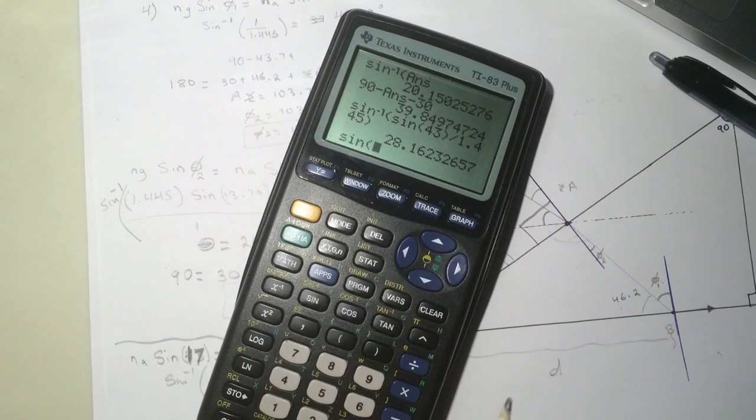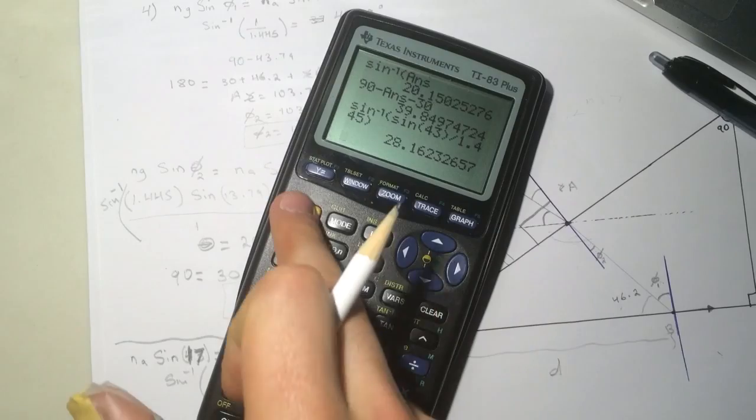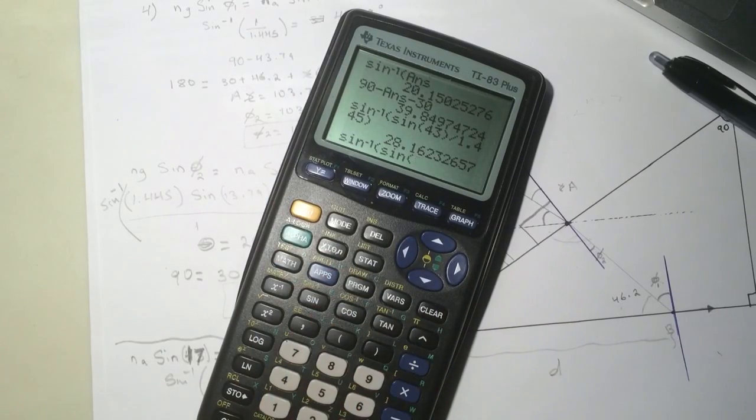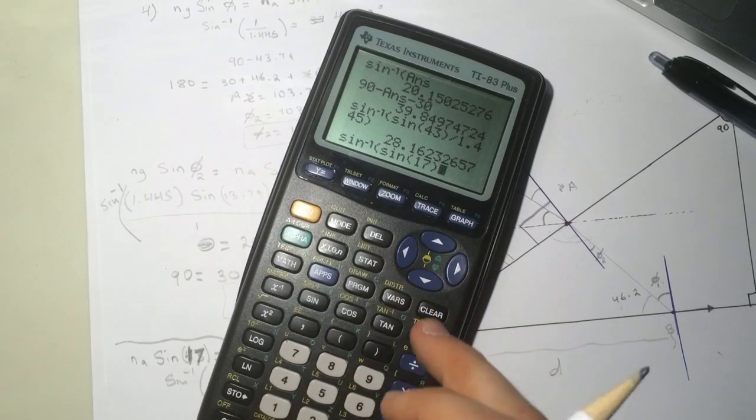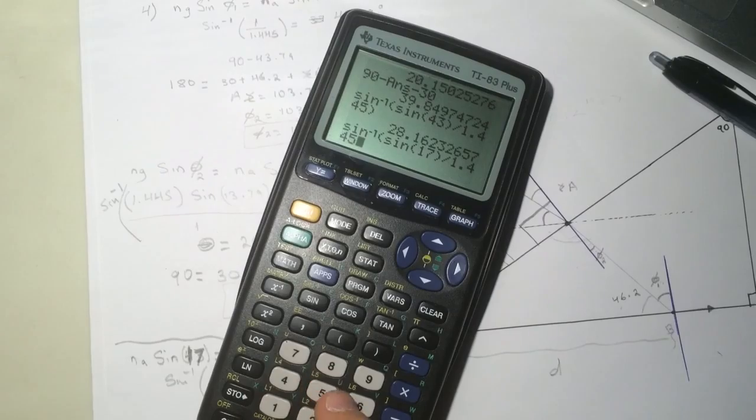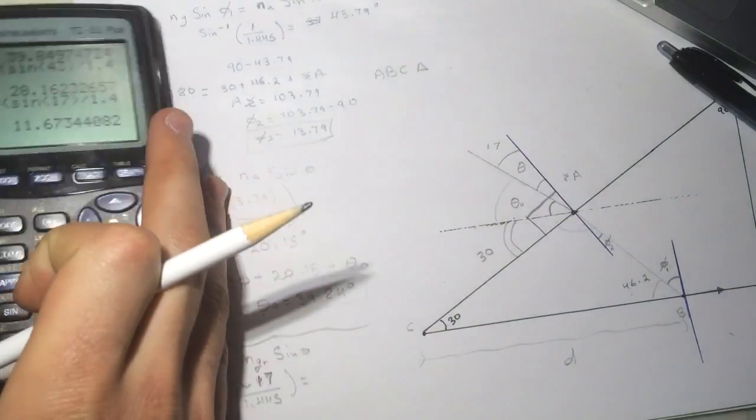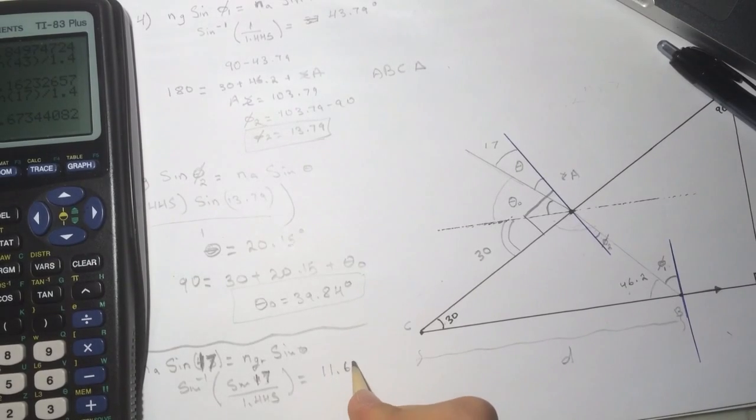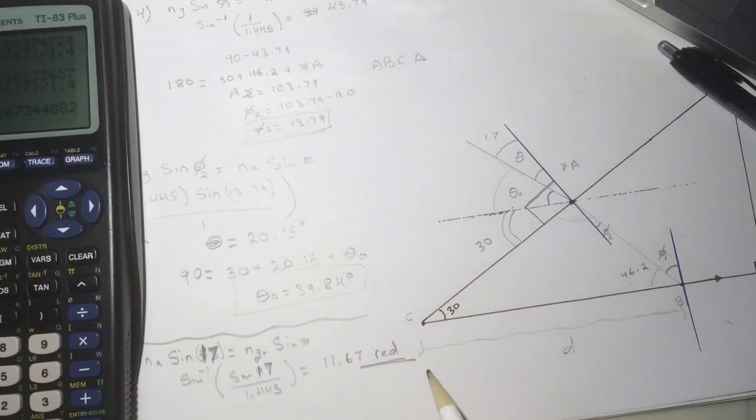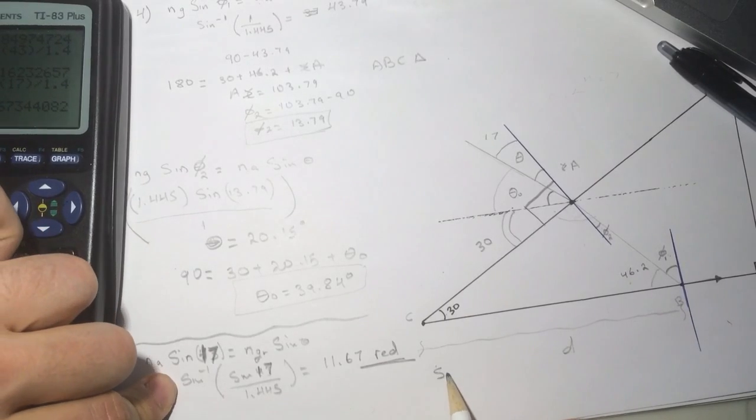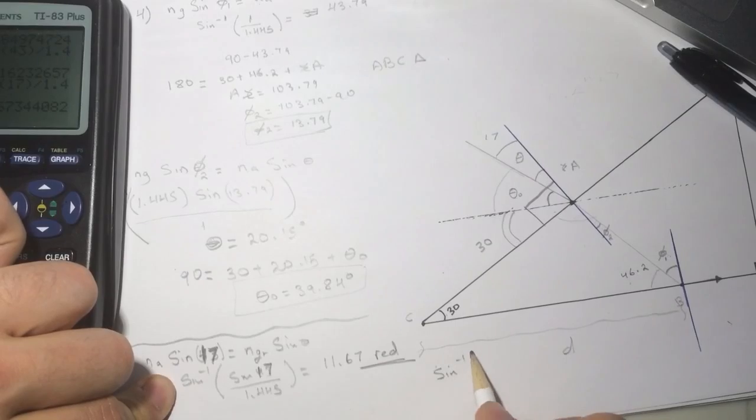It's not gonna affect anything because both of them have the same sign and we're just comparing. So sine inverse of sine 17 divided by 1.445. So the angle was 11.67 and this was for the red. Okay, and for the other guy which was the violet, let's do the same thing.